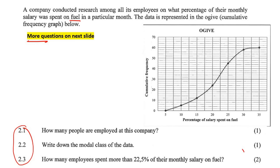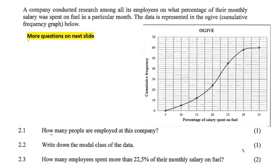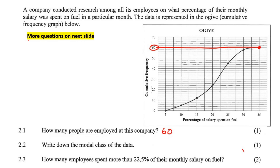The data is represented in an ogive. So here you've got percentage of salary spent on fuel and cumulative frequency on the axes. How many people are employed? Well, that's easy. You just go to the very top number and look over there — that'll be 60 people.